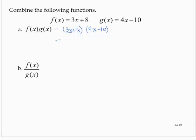So that would give me 3x times 4x. So 3x times 4x is 12x squared. Then 3x times negative 10 is minus 30x. Then I would take the 8 and apply it through the second polynomial as well. 8 times 4x is 32x, and 8 times negative 10 is negative 80.